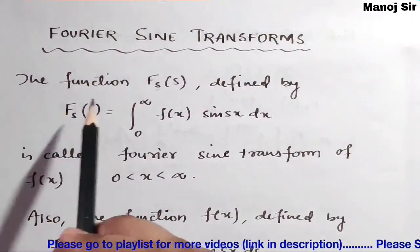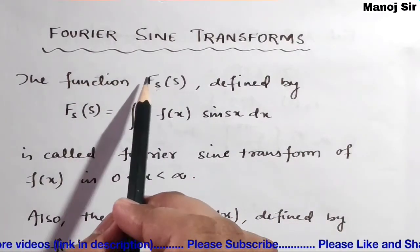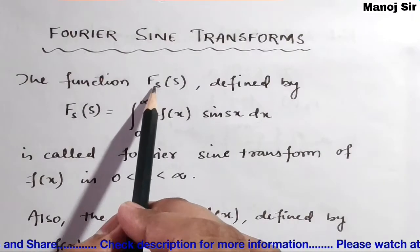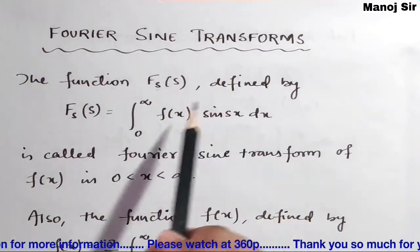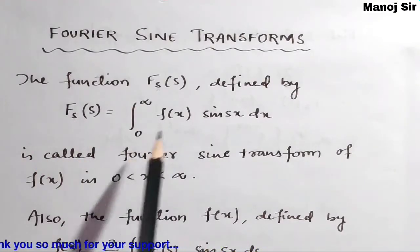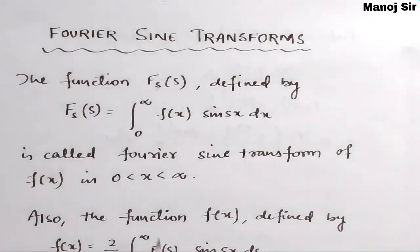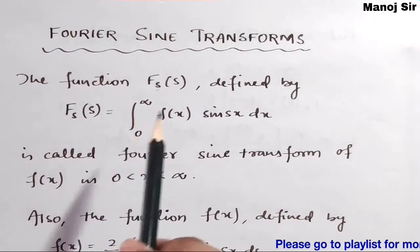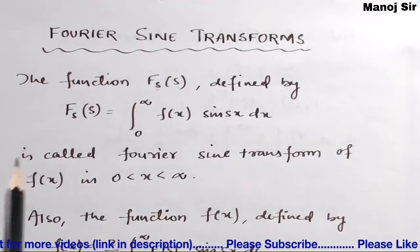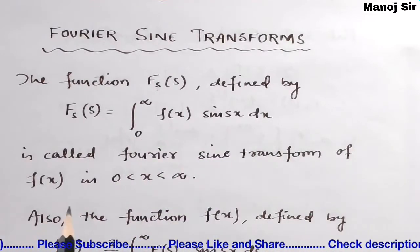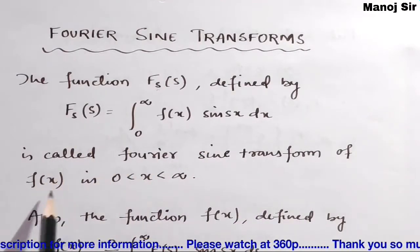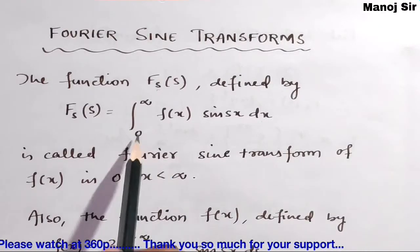Let us start with the new topic: Fourier sine transform. The function F_s of s — where the subscript s stands for Fourier sine transform — is defined by F_s(s) equals integration from zero to infinity of f(x) sine(sx) dx. This is called the Fourier sine transform of function f(x), and the limit is from zero to infinity.